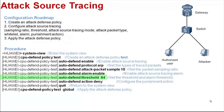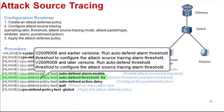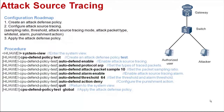Set the attack source tracing check and alarm threshold. Set the threshold to 64 — when the packet rate exceeds 64 PPS, these packets are considered attack packets and the device sends an alarm. Note that the attack source tracing commands were changed in V200R009, and the commands in V200R09 are used as examples here. Configure the punishment action — here we set it to drop packets. Return to the system view and apply an attack defense policy.